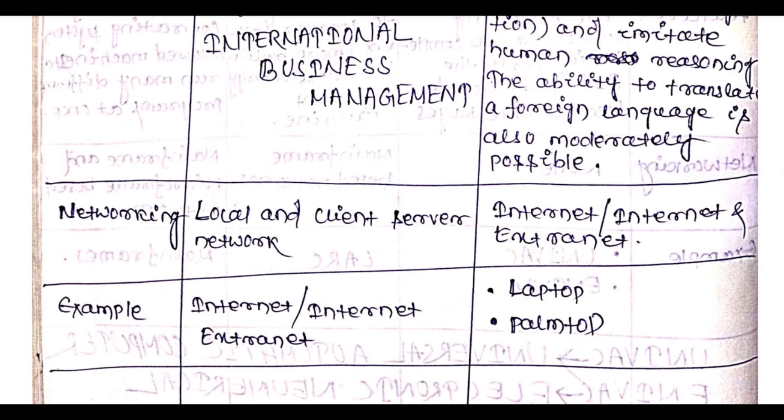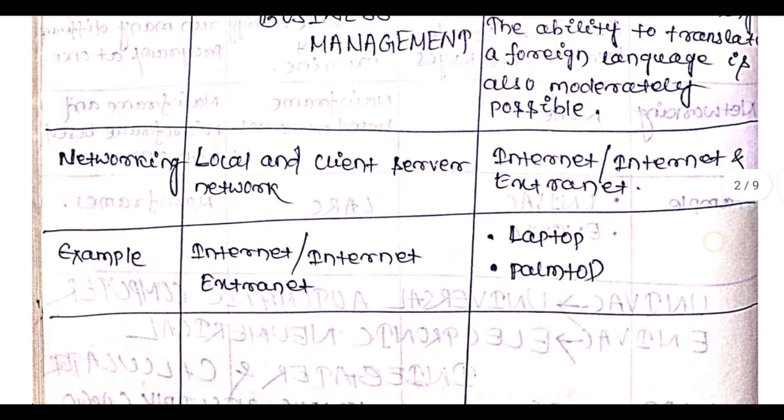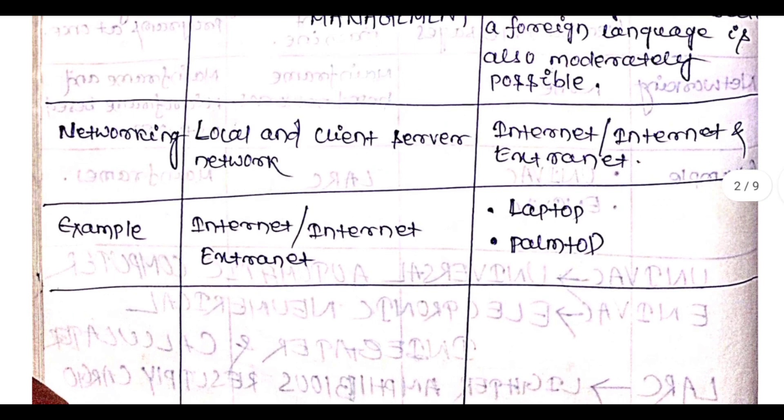For the fourth generation of computer networking, examples include local area networks (LAN), client-server networks, the internet, and extranet.